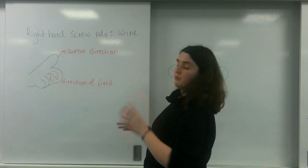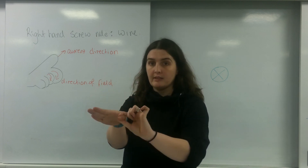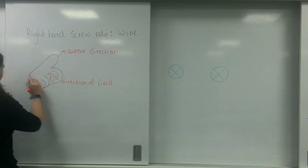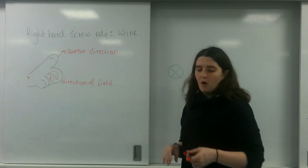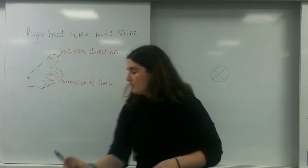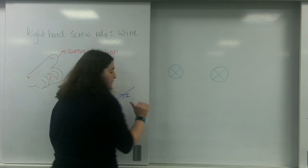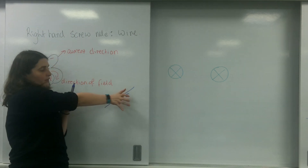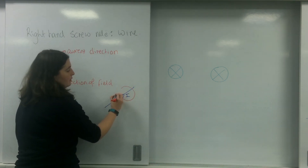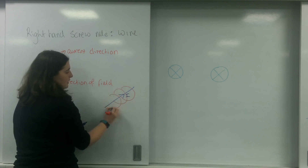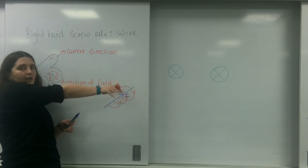In the right-hand screw rule with a wire, the thumb dictates the direction of the current. Remember, current flows from positive to negative — this is conventional current, not real current. So if I have a wire going in this direction with current I, and I use my thumb to dictate the direction of the current, my fingers are turning this way. If I draw the field lines around it, I end up with circles in that direction.